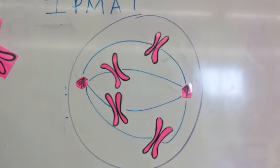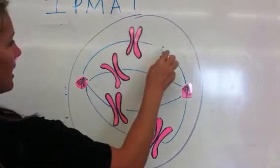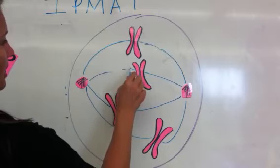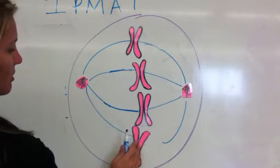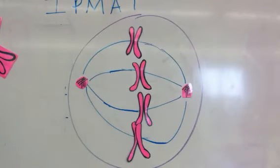During metaphase, these chromosomes are going to line up in the very center of the cell. Very center of the cell right here. So here we are in metaphase. Now here your chromosomes are going to stop for just a minute and think, is everybody lined up? Is everybody ready?